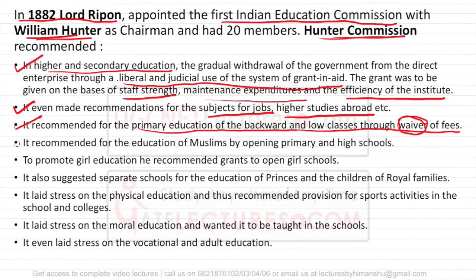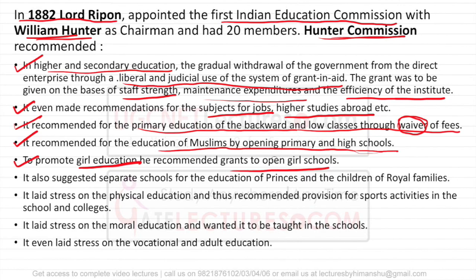Hunter Commission also recommended education for Muslims by opening primary and high schools, believing the existing education for Muslims was not up to the mark. To promote girl education, he recommended grants to open girls' schools, as the commission was not satisfied with the number of schools for girls. It also suggested separate schools for the education of princes and children of royal families — a complete example of divide and rule.